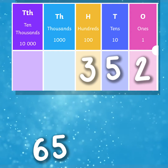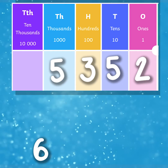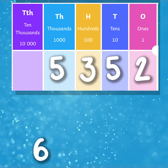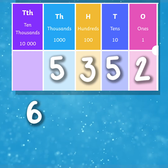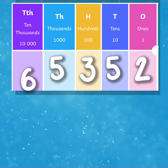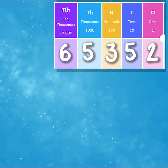We also have a 5 in the thousands column, meaning we have five thousands, and a 6 in the ten thousands column, meaning we have six ten thousands.